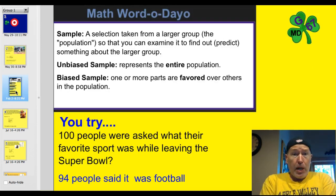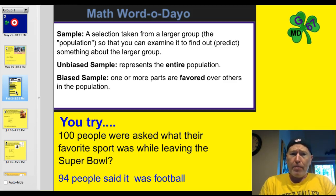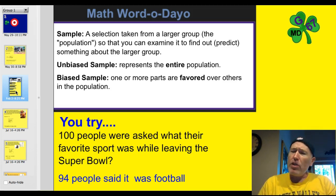A sample is a selection taken from a larger group, or the population, so that you can examine or predict something about the larger group — predict a trend. An unbiased sample represents the entire population; it's representative. A biased sample favors one or more parts.